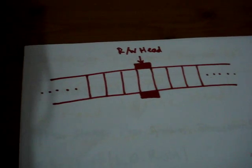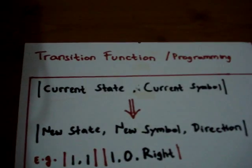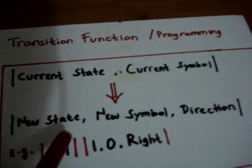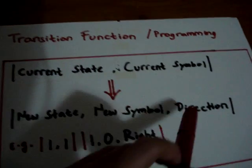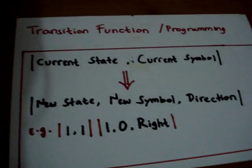The transition function or programming contains the current state, current symbol, new state, new symbol, and the direction, either left or to the right.